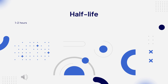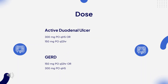Half-life: 1-2 hours. Dose: Active duodenal ulcer — 300 mg PO QHS or 150 mg PO Q12HR; most heal after 4 weeks. Duodenal ulcer maintenance — 150 mg PO QHS. Benign gastric ulcer — 300 mg PO QHS or 150 mg PO Q12HR. GERD — 150 mg PO Q12HR or 300 mg PO QHS.